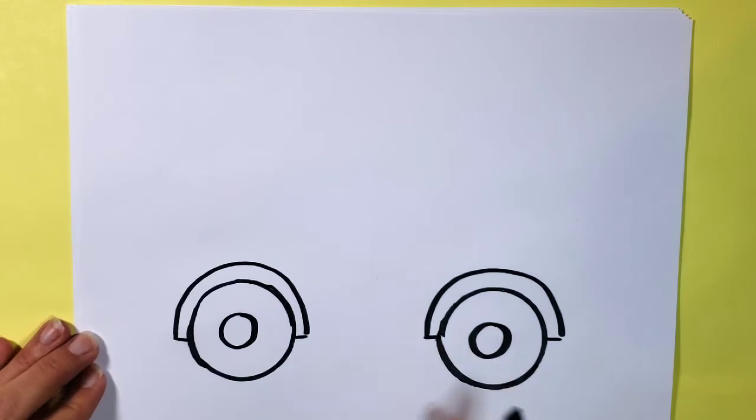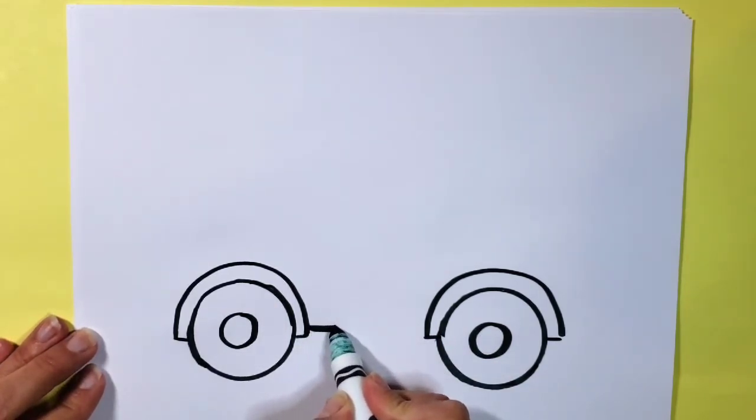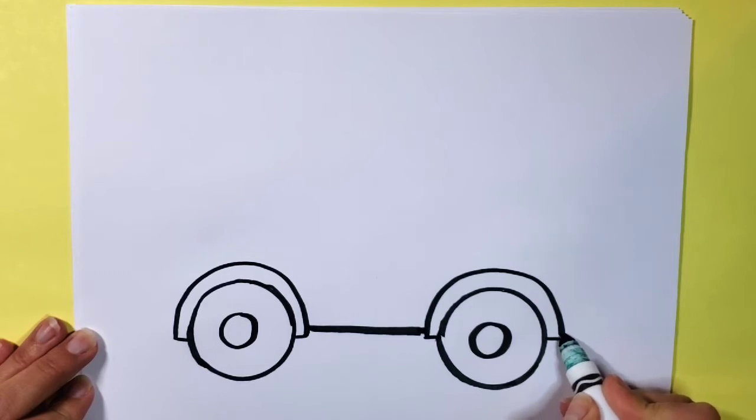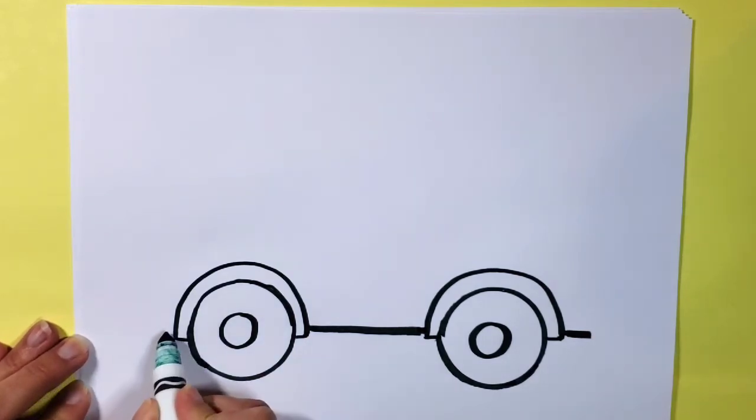Now I'm going to go ahead and connect the wheels together so that I make the bottom middle part of the bus. I'm using just a straight line to go across and then I'm going to put the same at the same level of that line, just a little line in the back and a line in the front of the bus.